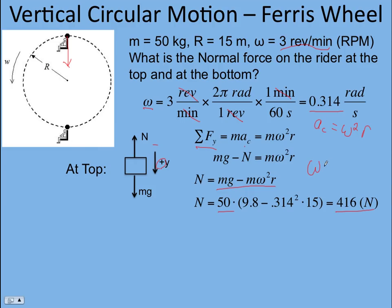And that comes out to 416 newtons. The weight of the person, mg, is 490 newtons. And so they feel lighter as they go over the top of the ferris wheel. And that may agree with your experiences on ferris wheels.